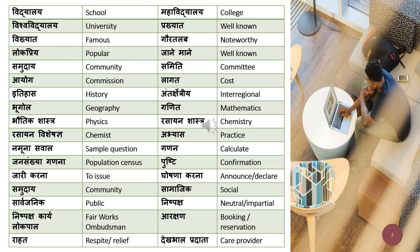Arakshan means 'booking' or 'reservation.' For example: maine apni seat bus mein arakshit ki — I have reserved my seat in the bus. Rahat means 'respite' or 'relief.' Dekhbal pradata means 'care provider.' For example: bachchon ke dekhbal ke liye bohat sare dekhbal pradata hain — there are many care providers for children.